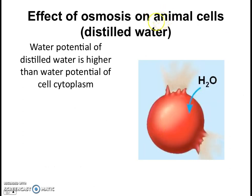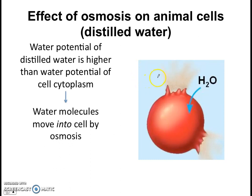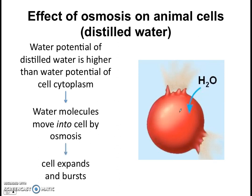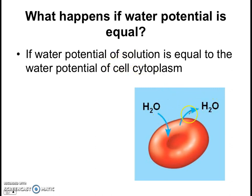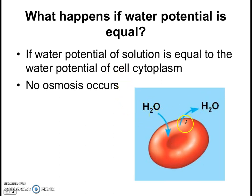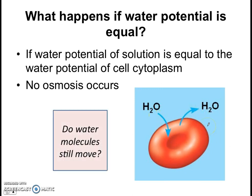What happens when you place an animal cell into distilled water? The water potential of distilled water is higher than the water potential of the cytoplasm, which causes water molecules to move into the cell by osmosis. The cell expands, and because there is no cell wall, it bursts — and all the inner cytoplasm leaks out. Finally, if the water potential is equal, the water potential of the solution equals the water potential of the cytoplasm, so no osmosis occurs. Water moves in and water moves out in equal amounts, so there's no visible change and no net movement of water molecules.